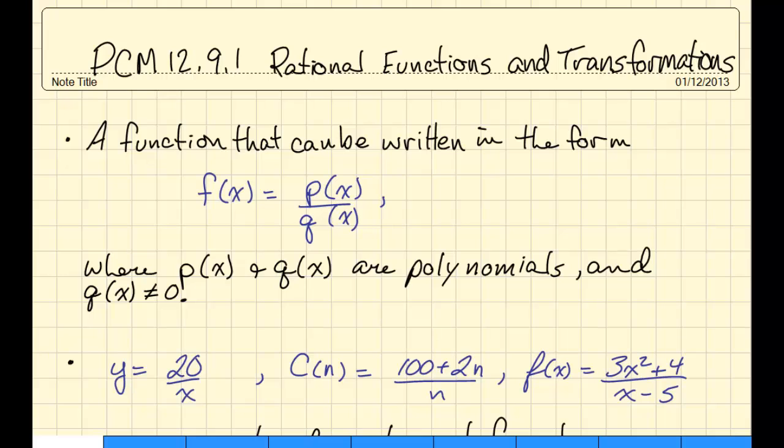So as we see here, a rational function can be written in the form f(x), some function, that's a function of x, is equal to some polynomial function p(x) in the numerator and some polynomial function q(x) in the denominator.